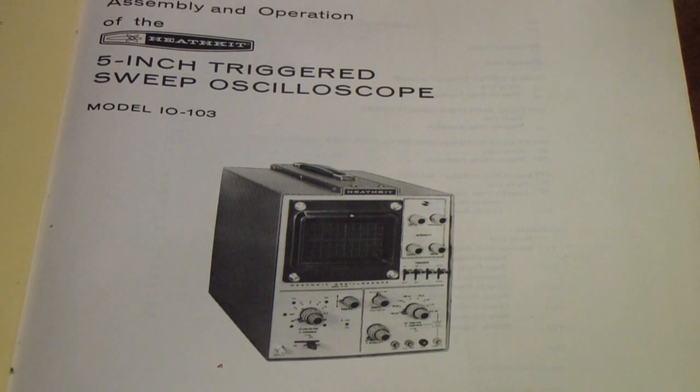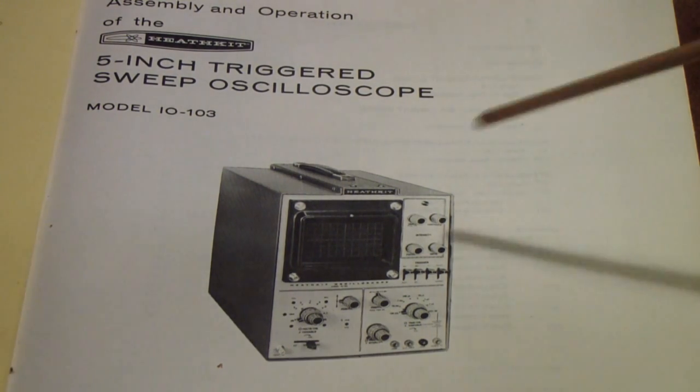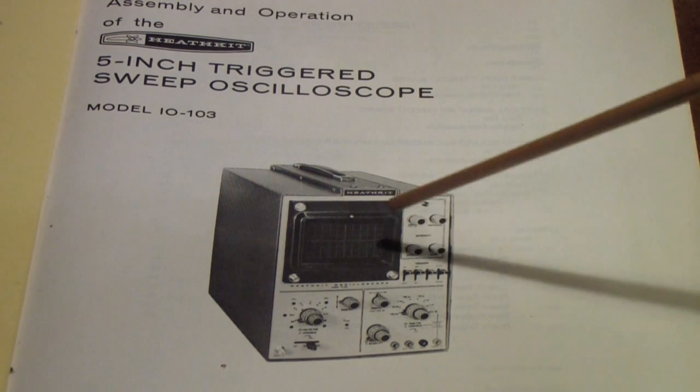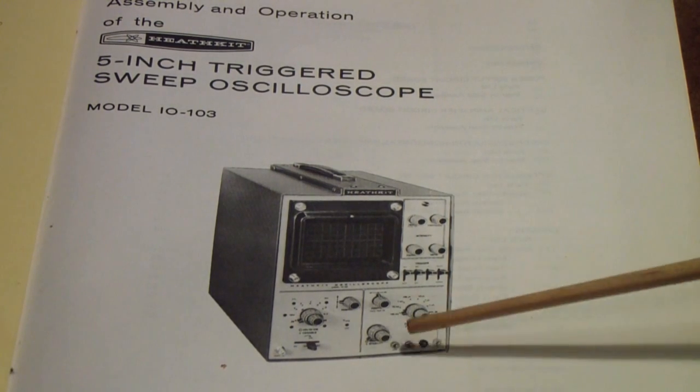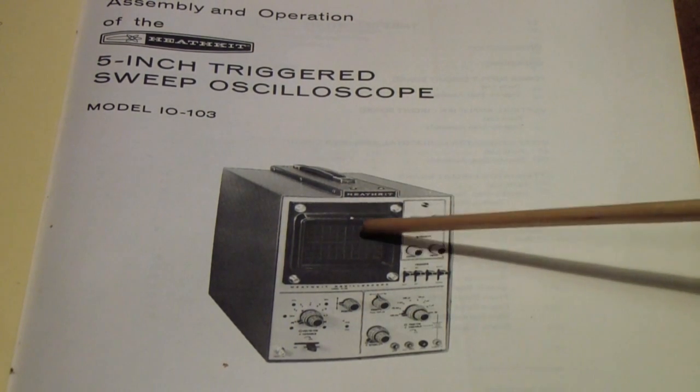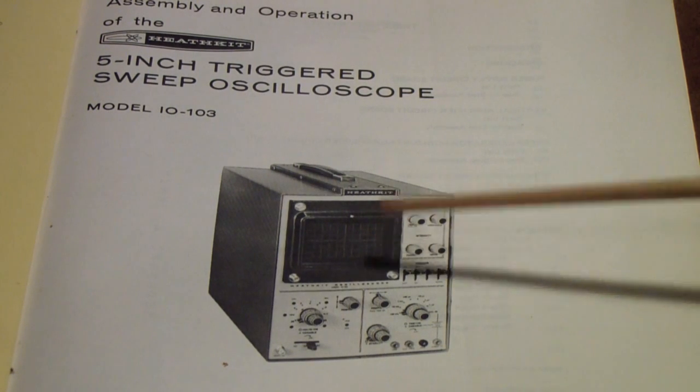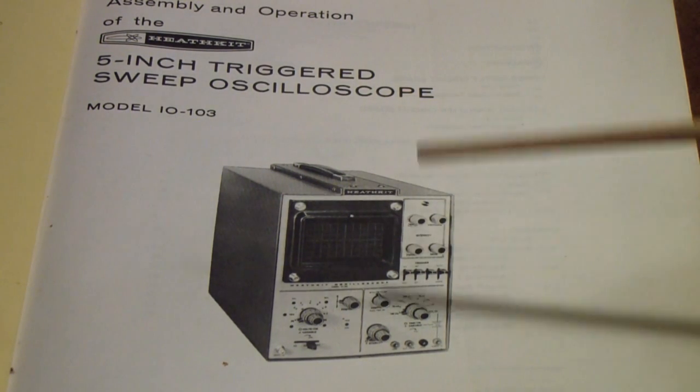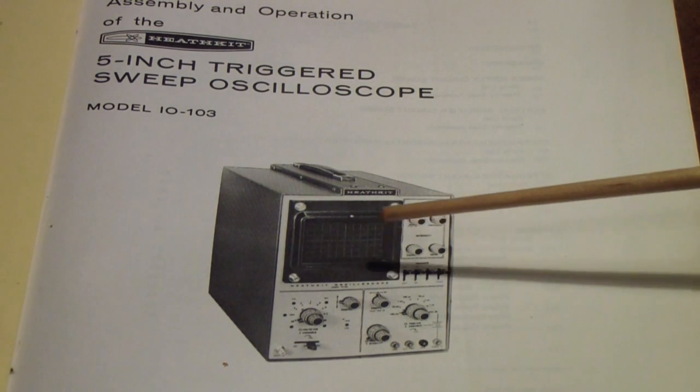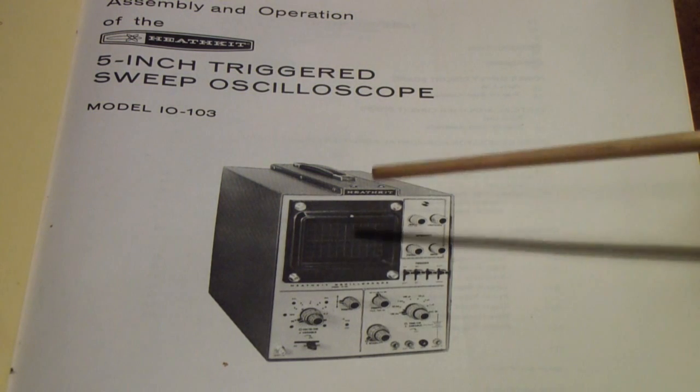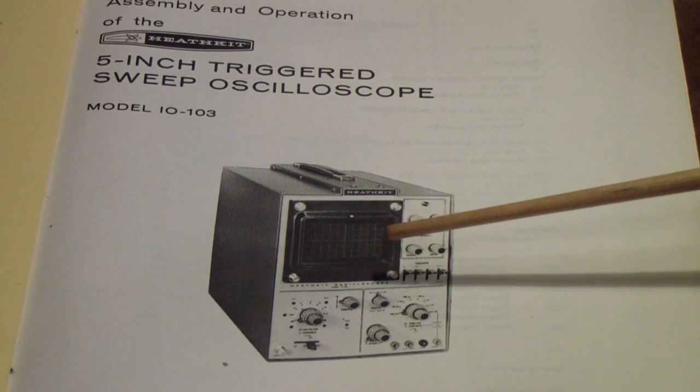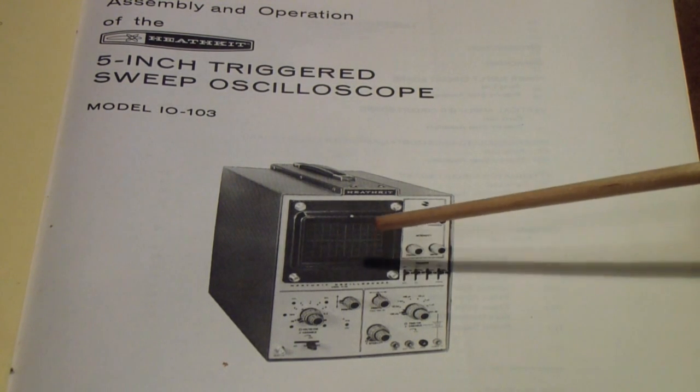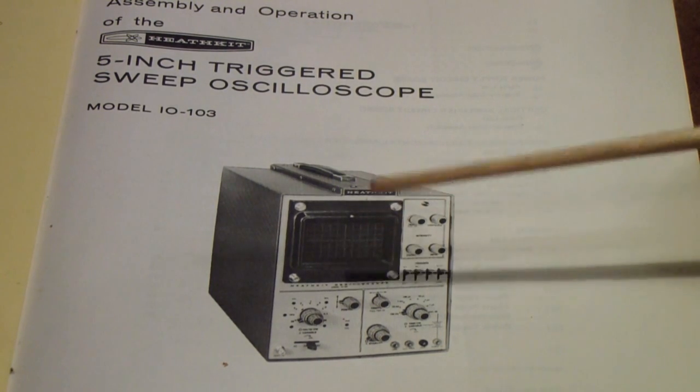In an earlier video about vintage oscilloscopes, I included the Heathkit IO-103 and mentioned the calibration signal that this scope produces. In doing so, I think I created some confusion, and someone in a comment asked about that. It actually is one of those comments that seems fairly innocuous on the surface, but the more I thought about it, the more I realized I've never really seen anybody talk about this issue.